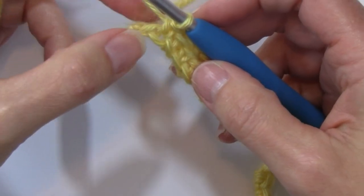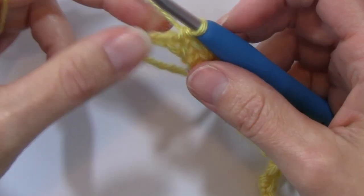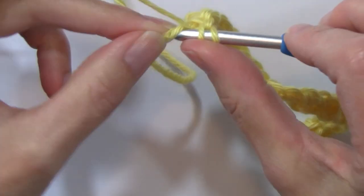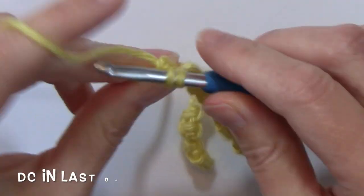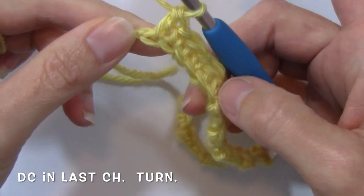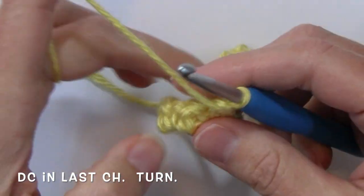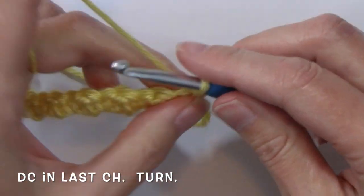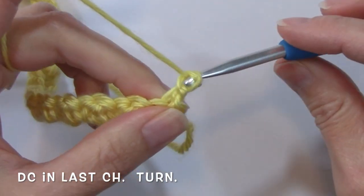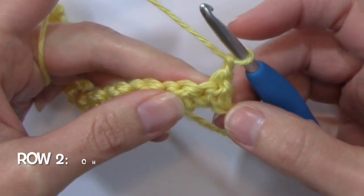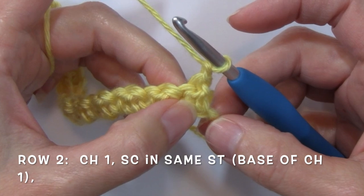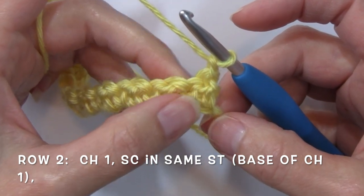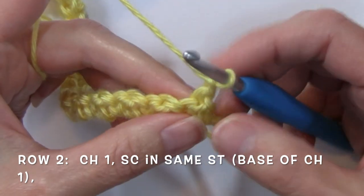So when we get to the end of the row, we have our last chain here to work. We're going to be working a double crochet in that last chain. And then we're going to be turning our work and chaining one for row two. And remember, we just worked a double crochet in that final chain. To start out with for row two, we're going to start with a single crochet.